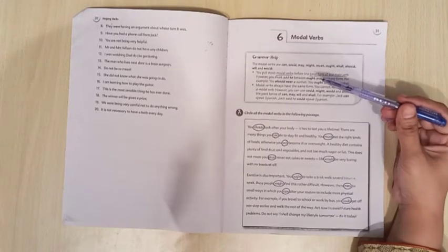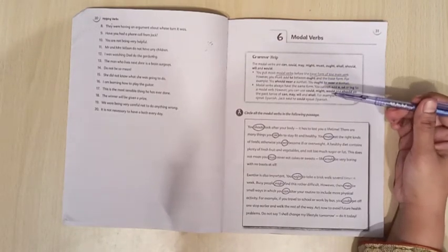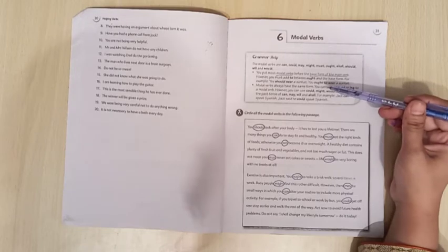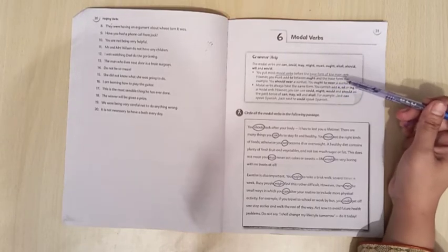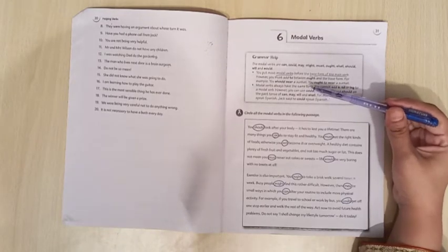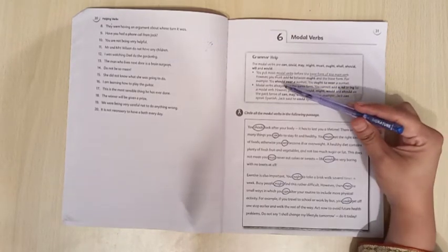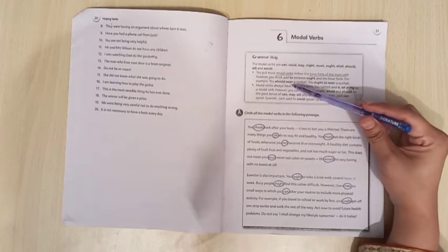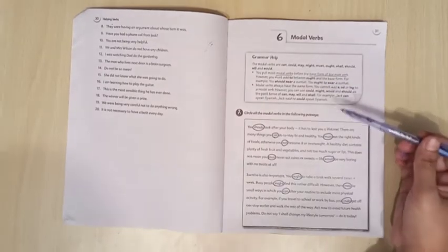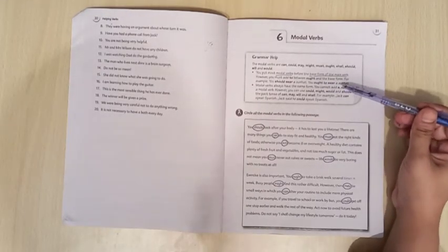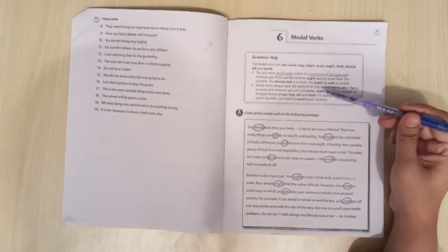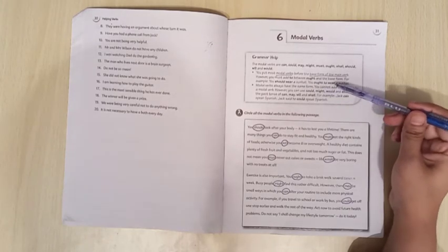You put most modal verbs before the base form of the main verb. However, you must add 'to' between ought and the base form. For example, you should wear a sun hat. Should is a modal verb here and wear is a base form. Next, you ought to wear a sun hat. In this, 'to' is between ought and the base form.